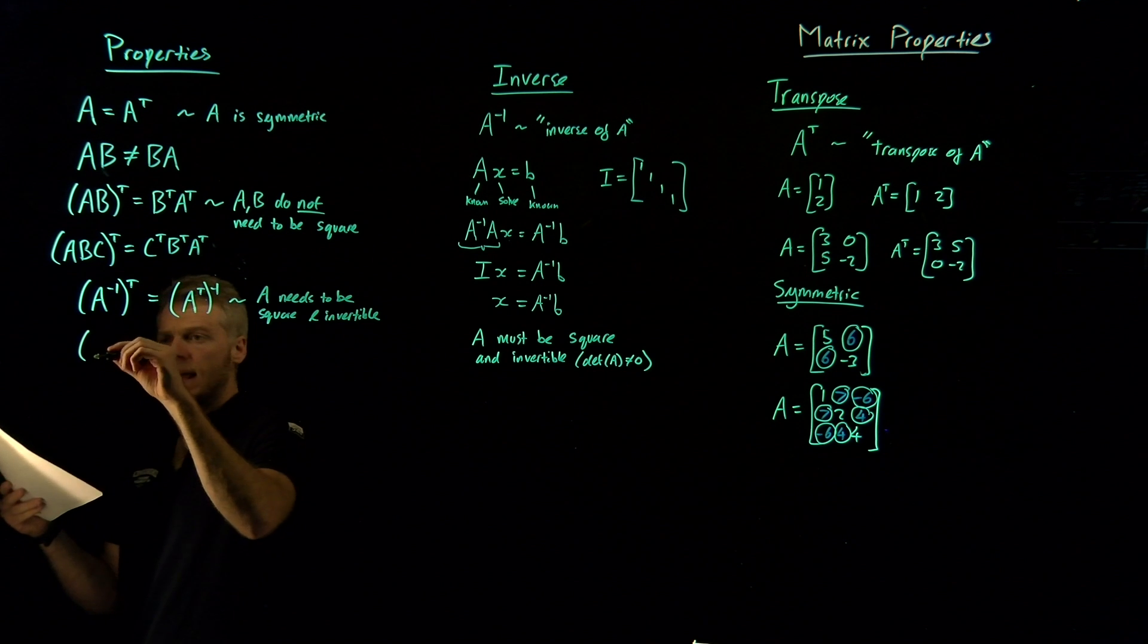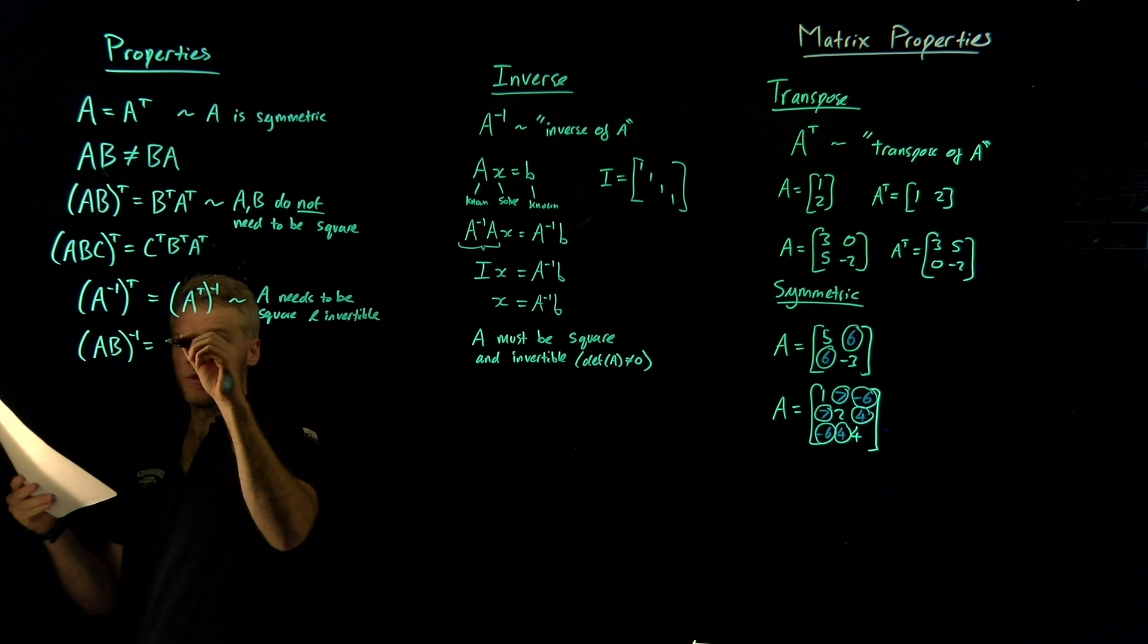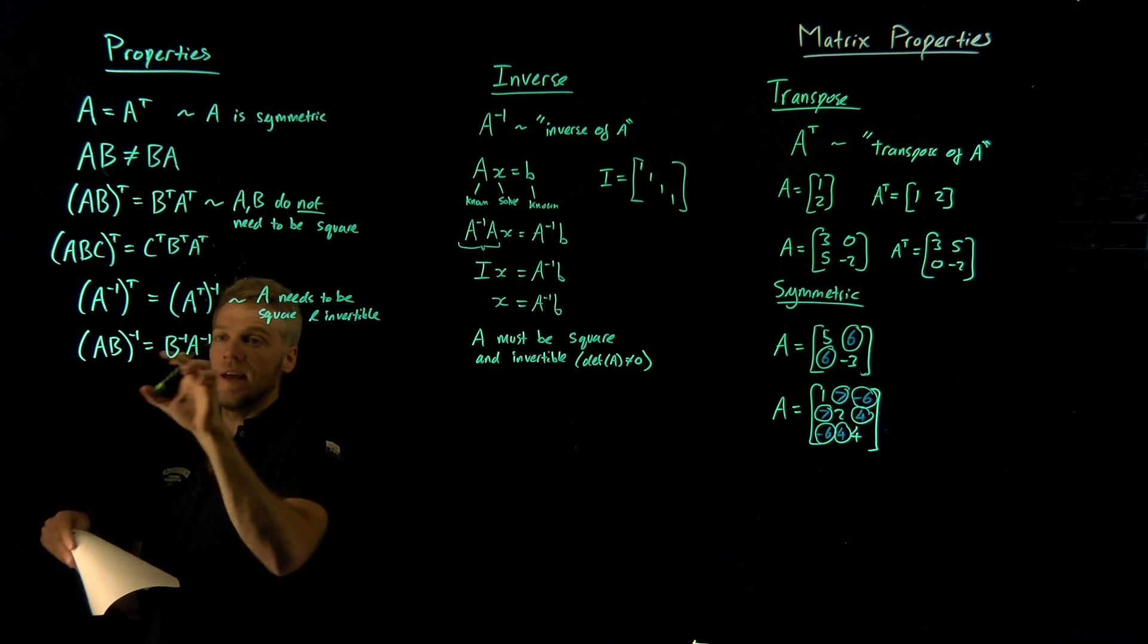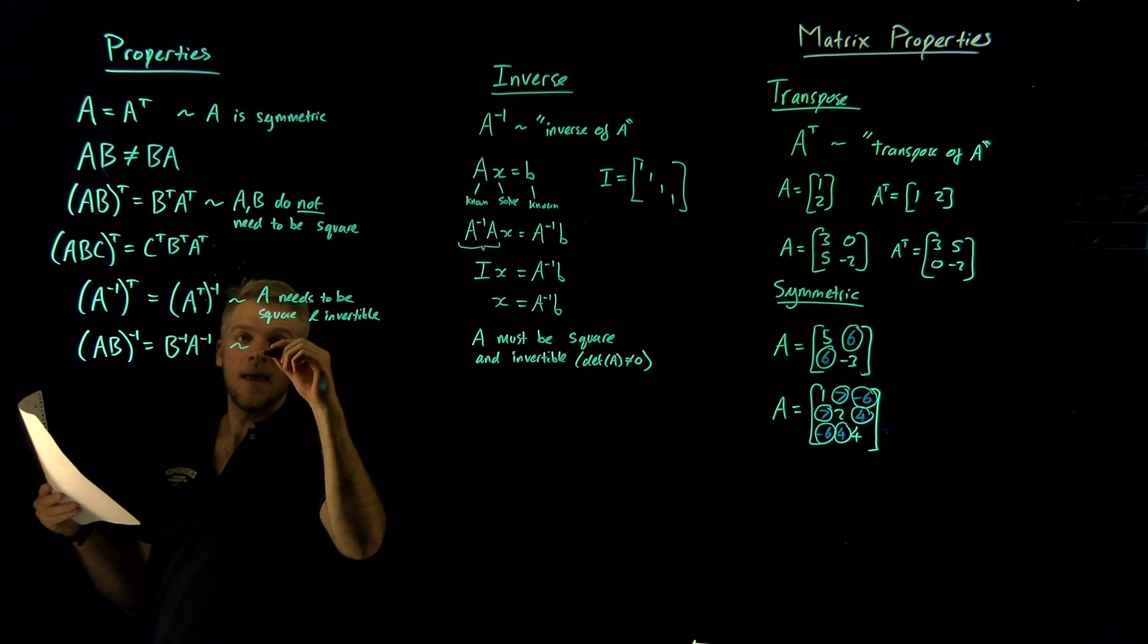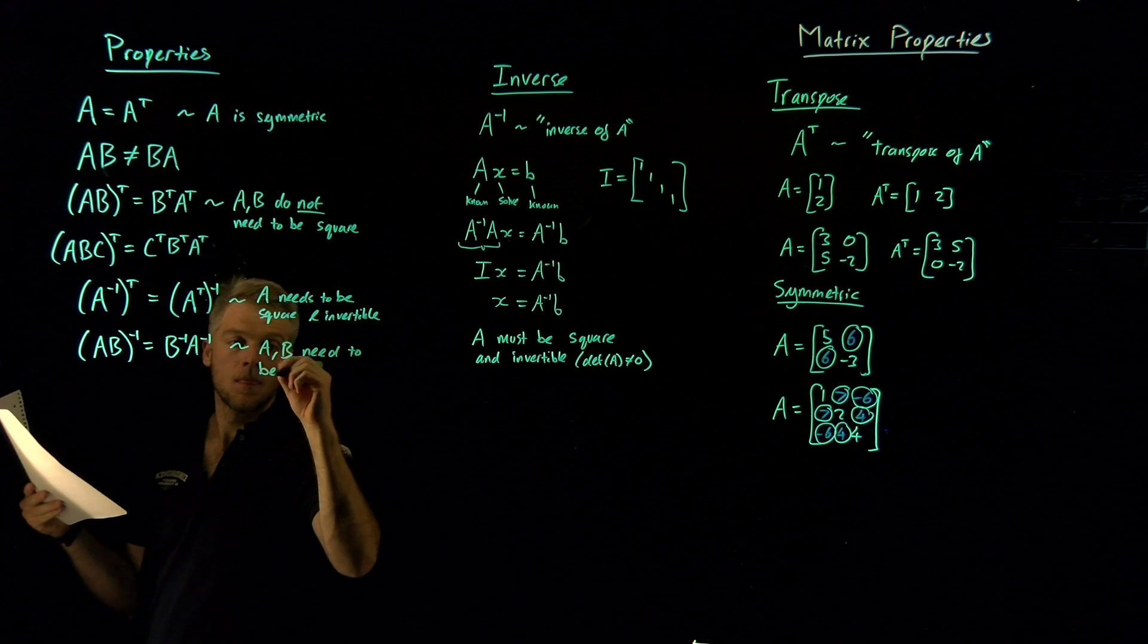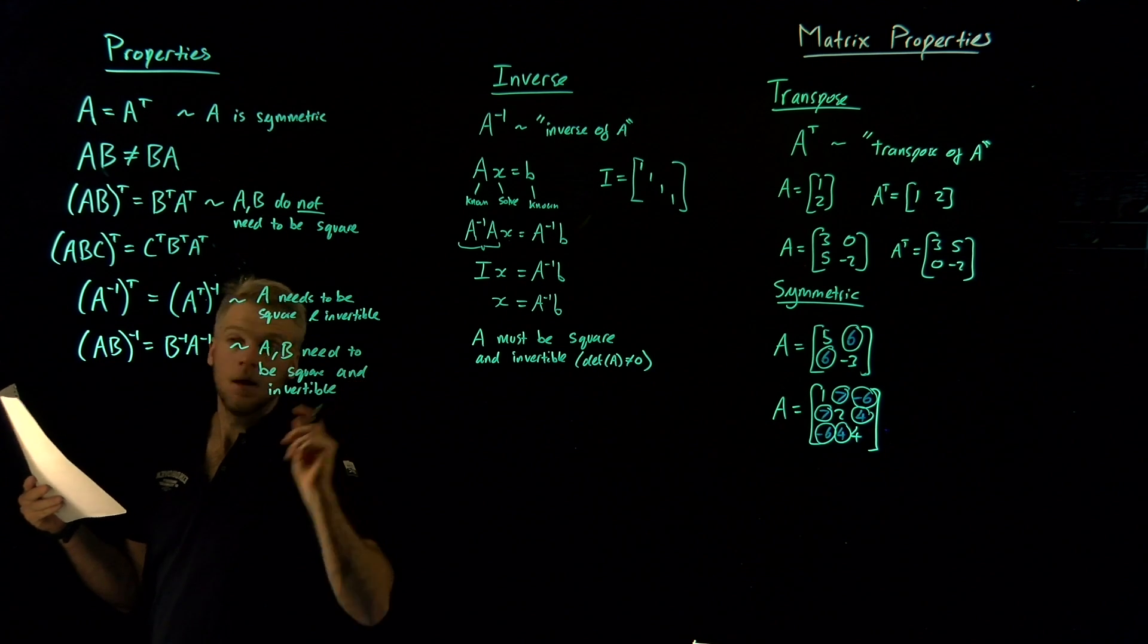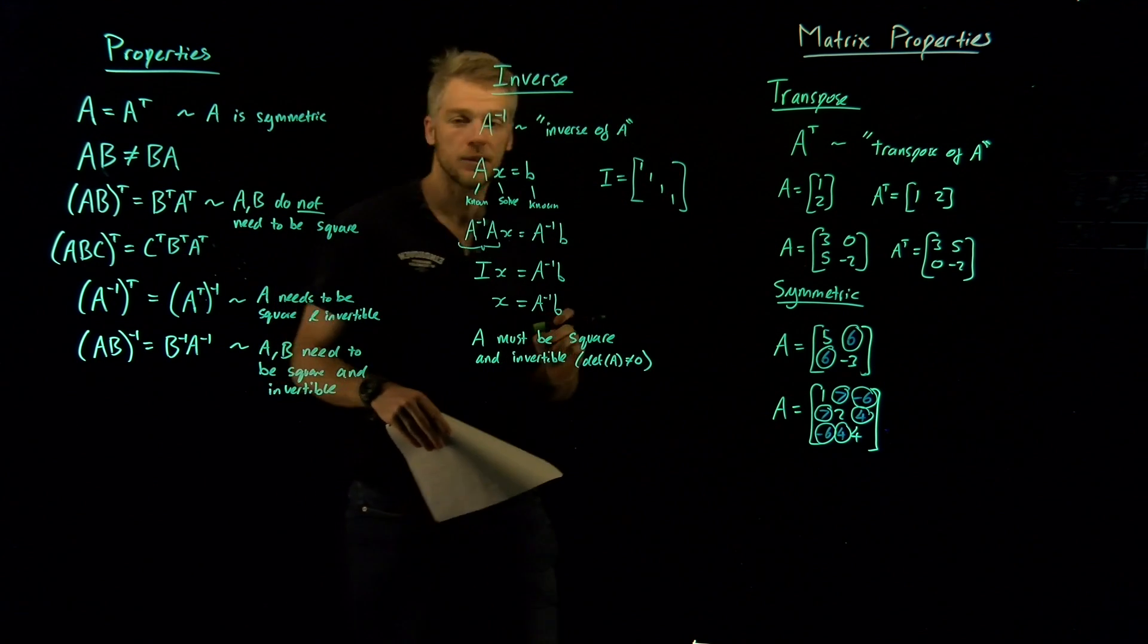Another one is that AB inverse is equal to B inverse A inverse. And so once again, similar to the transpose, the B and A switch sides and you just inverse them individually. And I should say that in this case, A and B need to be square and invertible. And once again, what do I mean by square? Well, this is an example of a square matrix because its number of rows is equal to its number of columns.